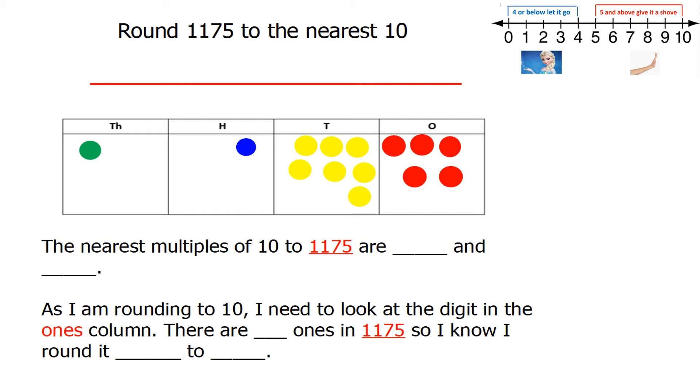The nearest multiples of 10 to 1175 are... I can see that this time we have got 7 tens, so the multiple of 10 before must be 1170, and 10 more would be 1180.